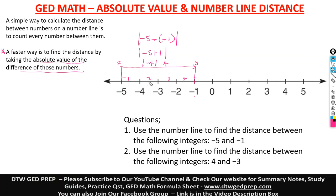Sometimes on the GED test, I've seen questions where they ask what is the distance, and your answer options A, B, and C won't just be a single number — they'll be a representation in absolute value form. That's why it's important to know how to calculate this using absolute value.